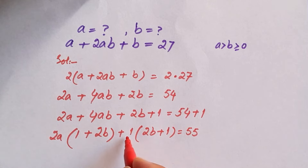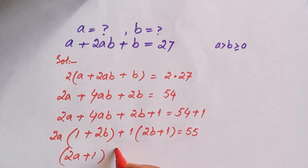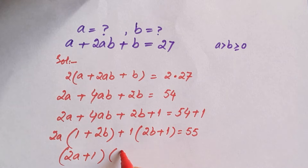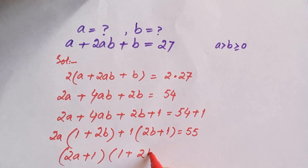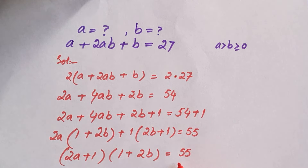We got the two factors: 2a plus 1, and 1 plus 2b which is the same as 2b plus 1. So the other factor is 1 plus 2b, giving us (2a plus 1)(1 plus 2b) is equal to 55. On the left-hand side we have two factors multiplying each other.